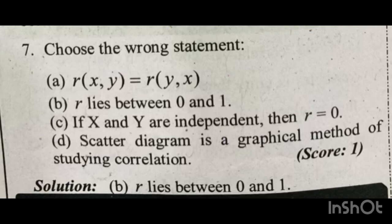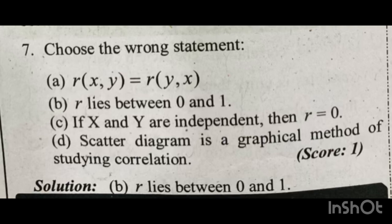Option B states R lies between 0 and 1 — that is the wrong statement. Using the elimination method, it is very clear that option B is the right answer, meaning it is the wrong statement. Because our question asks us to choose the wrong statement. R actually lies between -1 and +1, not just 0 and 1. So option B is the wrong statement and the correct answer.